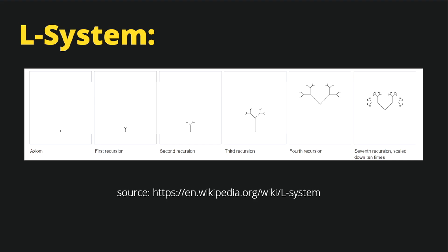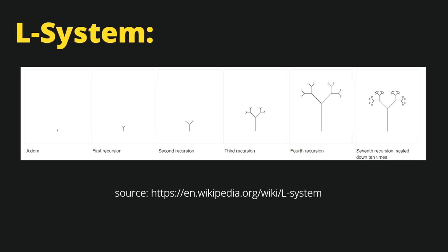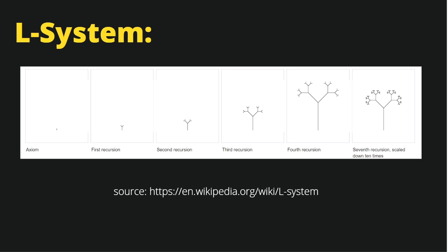We can immediately see a potential for creating procedural trees or procedural plants here. You can read more on Wikipedia about how this algorithm was developed to describe the growth of cells and later of plants. But this doesn't interest us in this tutorial, because we need to establish how to map this set of characters into a procedurally generated town.